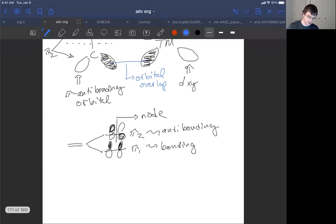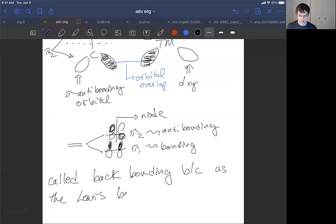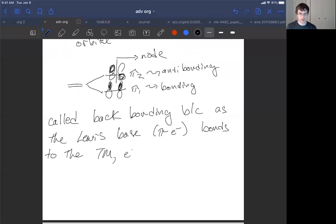Okay, so why do we call this a backbonding interaction? This is called backbonding because as the Lewis base which has pi electrons bonds to the transition metal, electrons from the transition metal. So as the, let me recap. So it's called backbonding because what we're doing is we're taking the Lewis base, which is the pi electron system. As it bonds to the transition metal, electrons from the transition metal go back. So it's backbonding. It's going backwards and bonding.